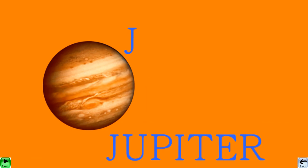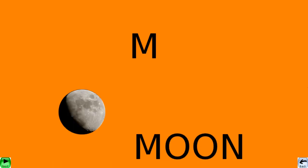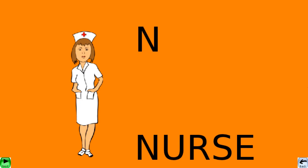J for Jupiter, K for kite, L for lemon, M for moon.